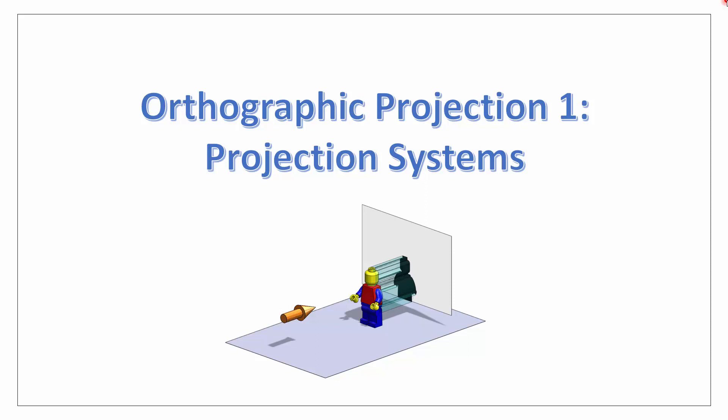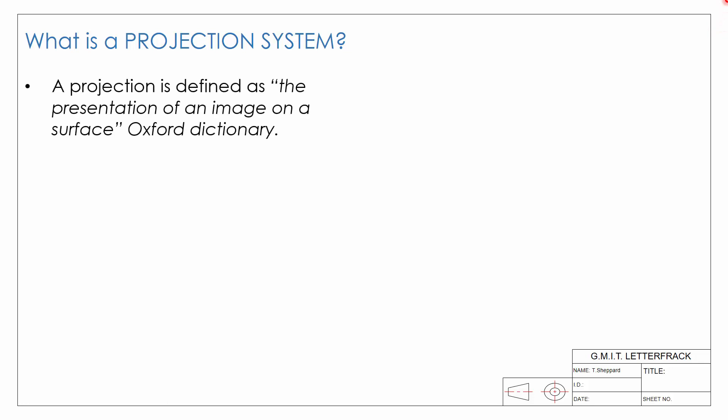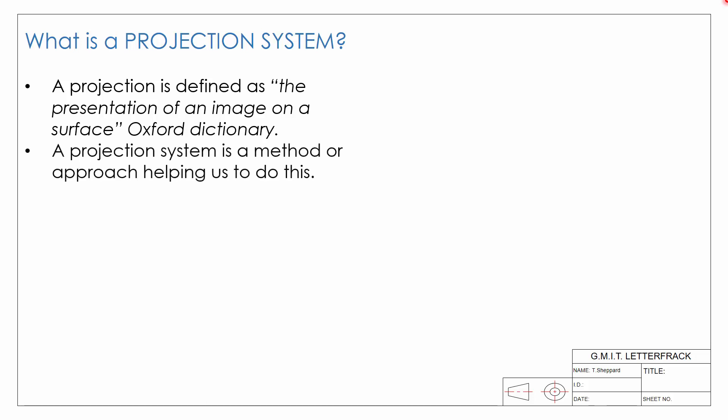Hello and welcome to the first video in our webinar series on the topic of orthographic projection. In this video we're going to look at general projection systems and the components needed to create a projection. We'll begin by asking: what is a projection system? A projection is defined as the presentation of an image on a surface, and a projection system is a method or set of rules to help us do this.